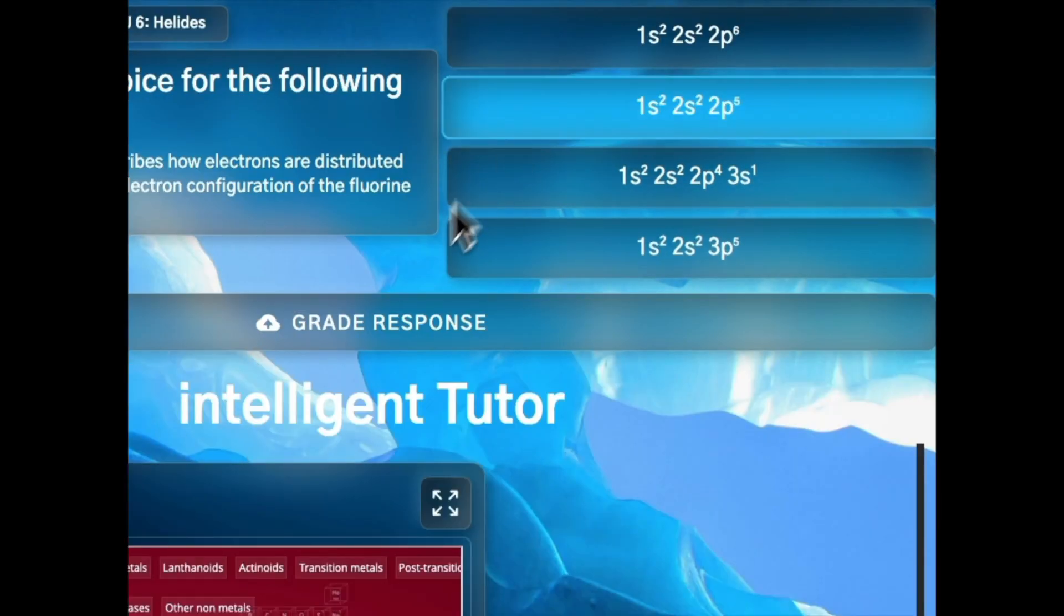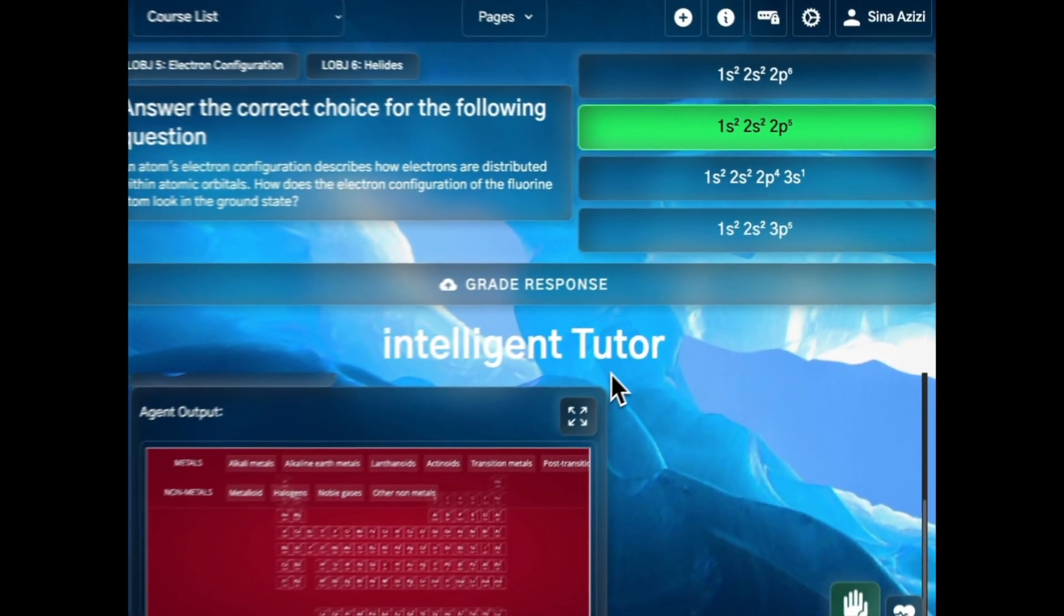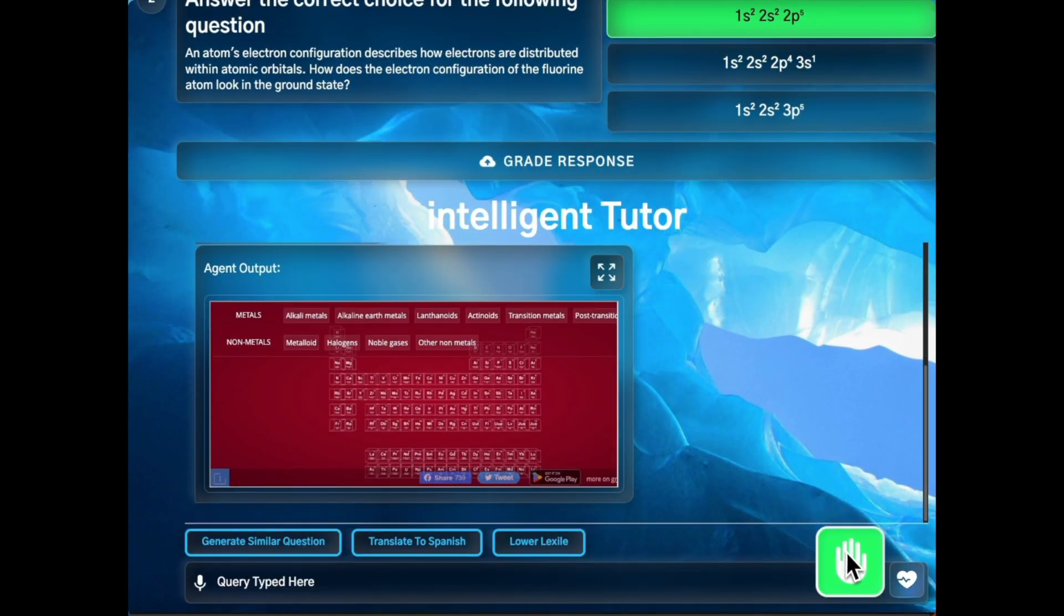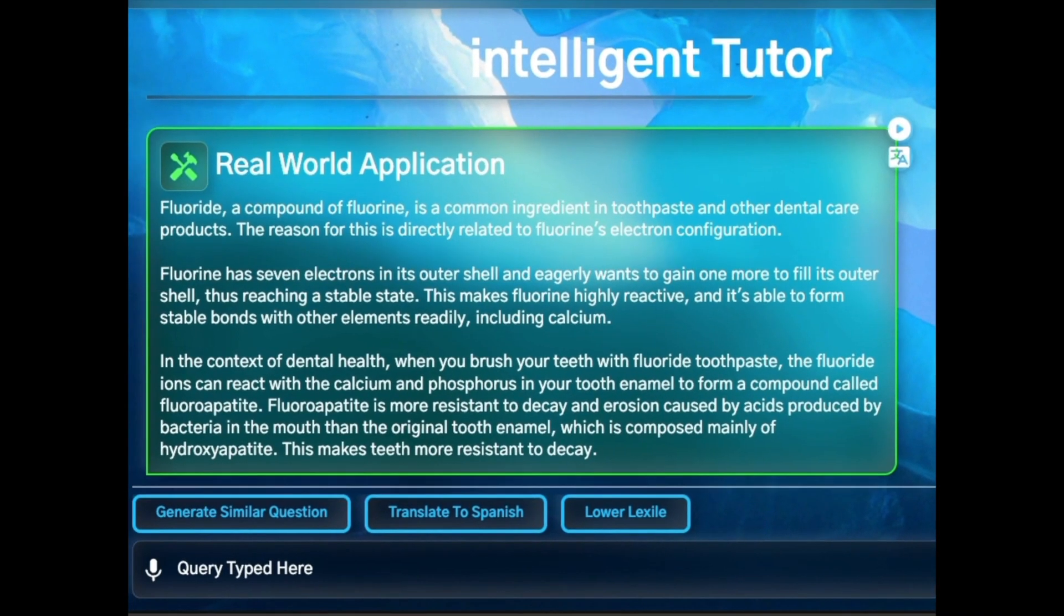By responding correctly to questions, the hand agents will become visible, suggesting a real-world use for their knowledge.